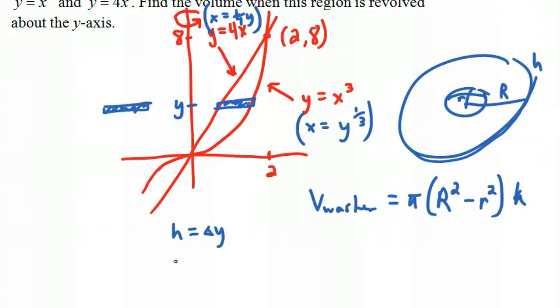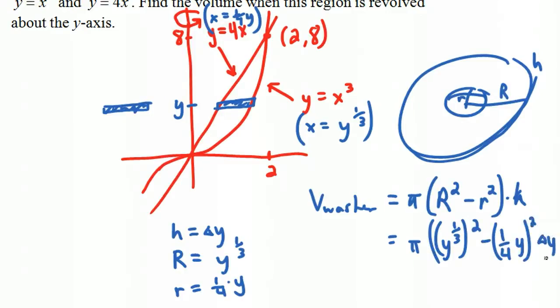So our big R is y to the one-third power, the cube root of y, and the little r is one-fourth of y. If we were to plug this in right here, we would get pi times y to the one-third squared minus one-fourth y squared. And the h is just delta y.